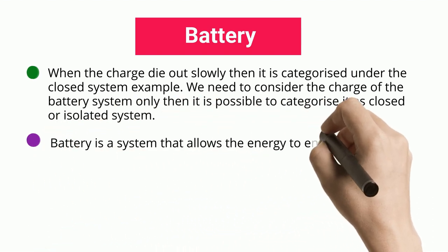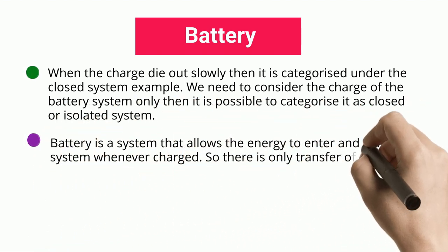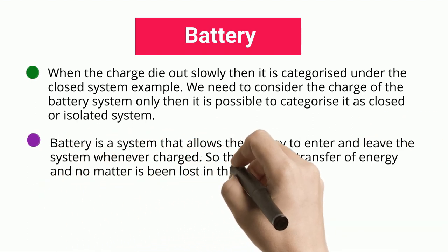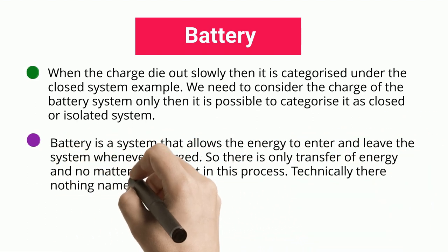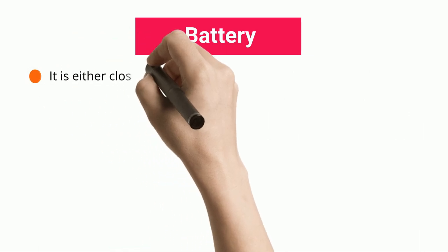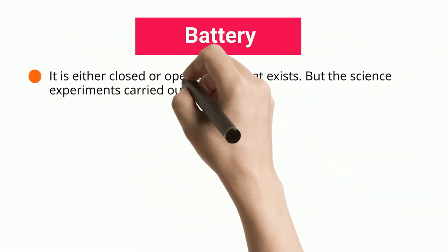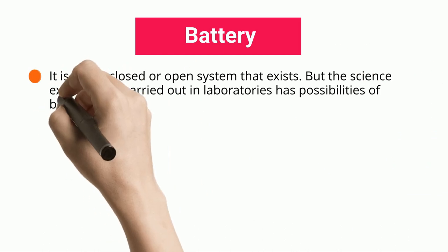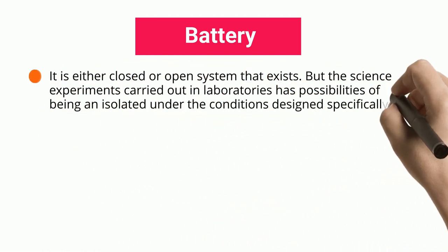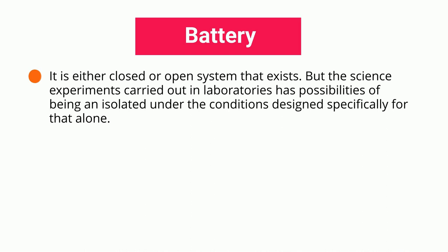A battery is a system that allows energy to enter and leave the system whenever charged, so there is only transfer of energy and no matter is lost in the process. Technically there is nothing strictly named an isolated system — it is either closed or open. But science experiments carried out in laboratories have possibilities of being isolated under conditions specifically designed for that.